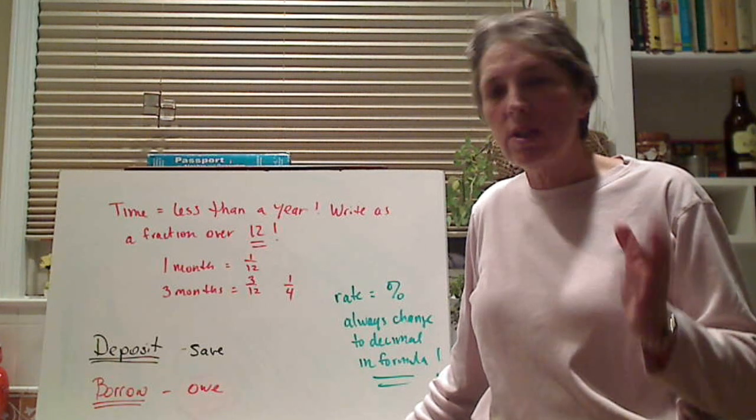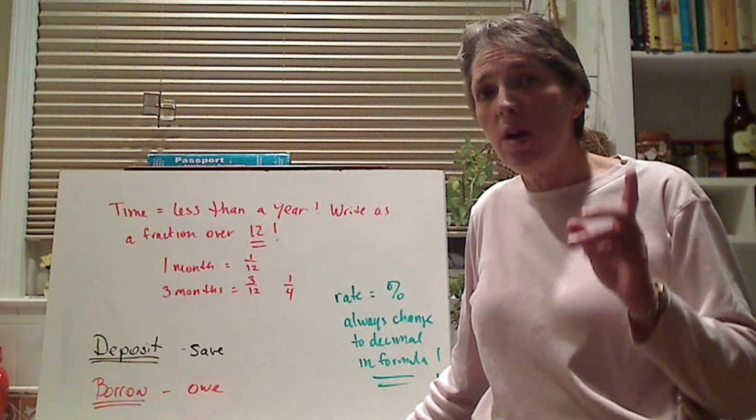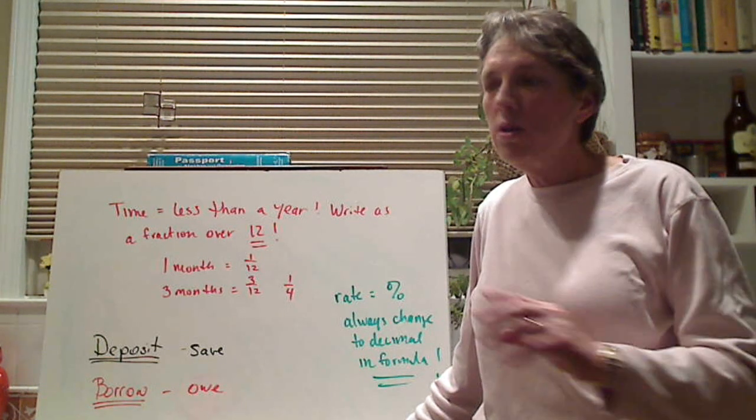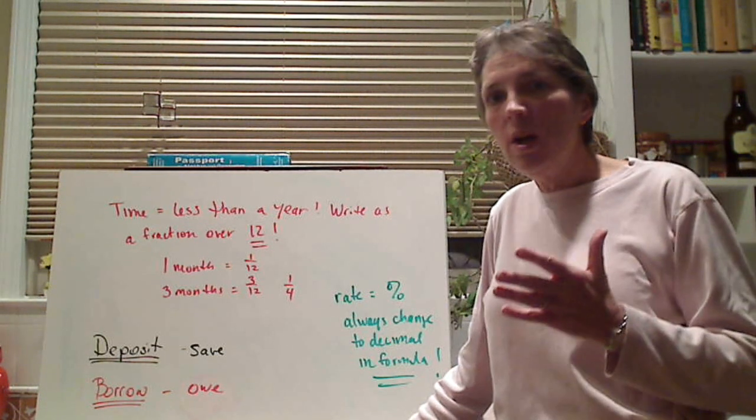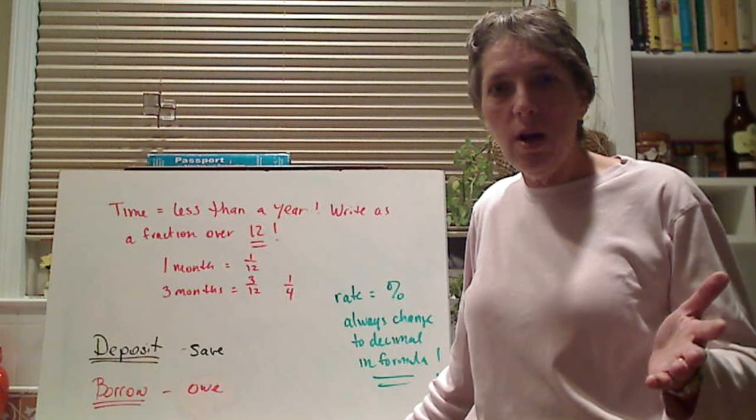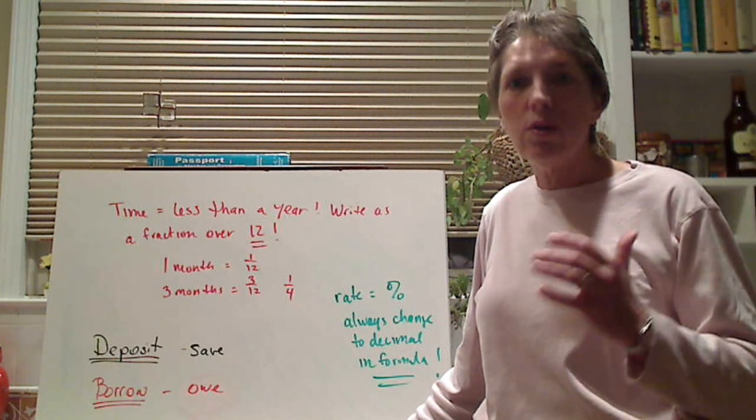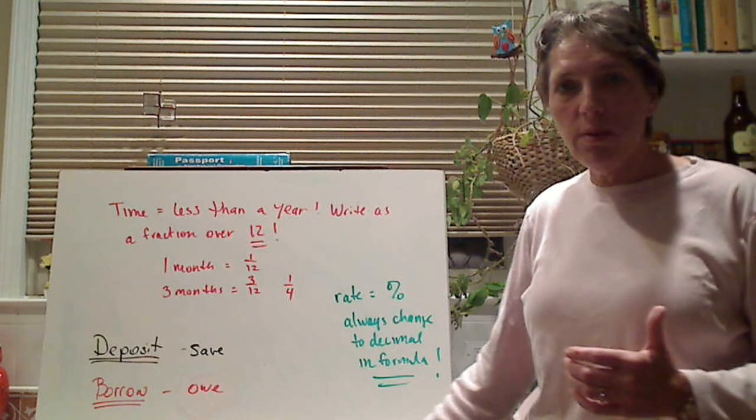You don't write it over 24 because it's always, simple interest is based on one year. So you don't write it over anything, any other number. If it's years with months, like 18 months, you write it 18 over 12. And you can simplify that.